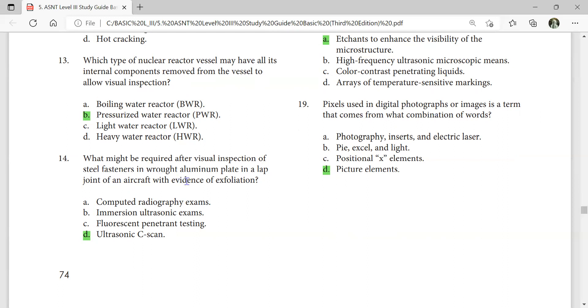What might be required after visual inspection of steel fasteners in a riveted aluminum plate in a lap joint of an aircraft with evidence of exfoliation? Ultrasonic C-scan.